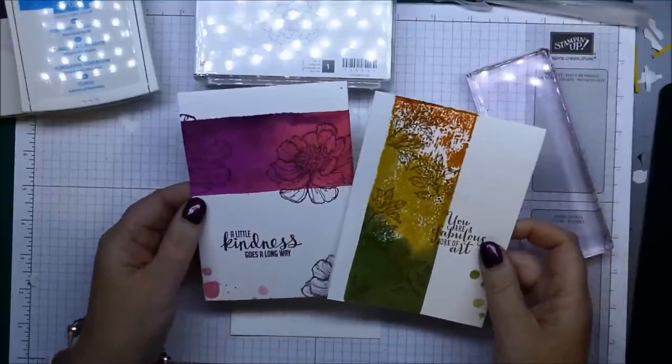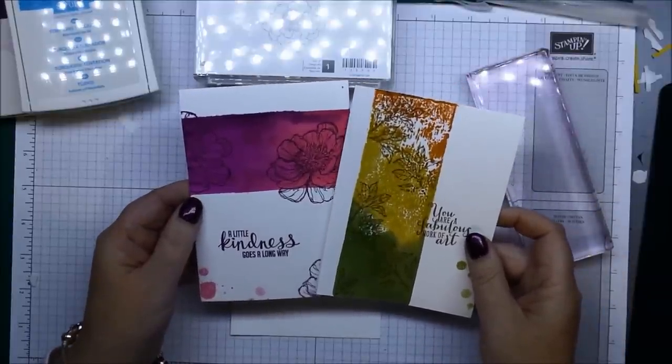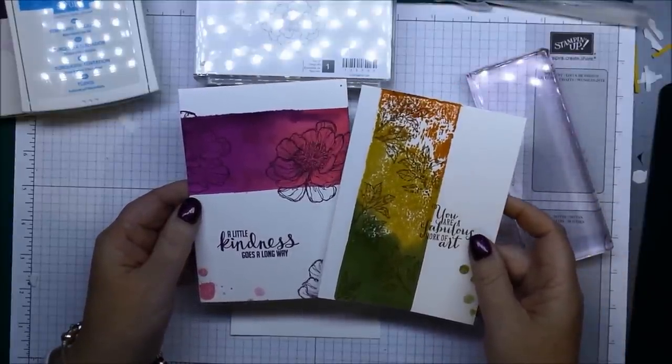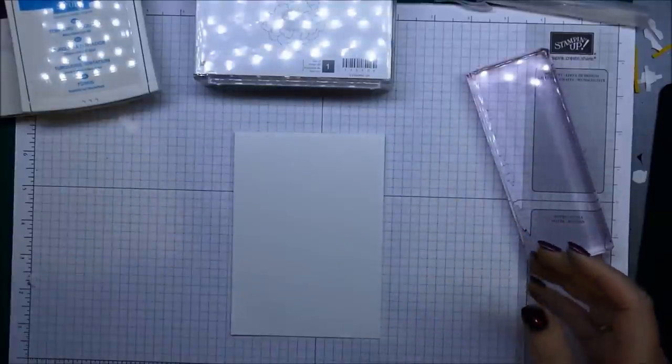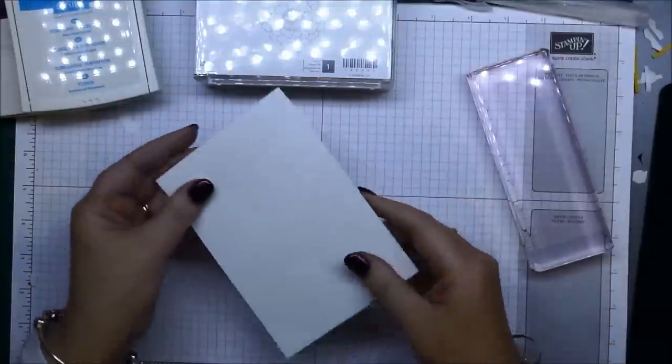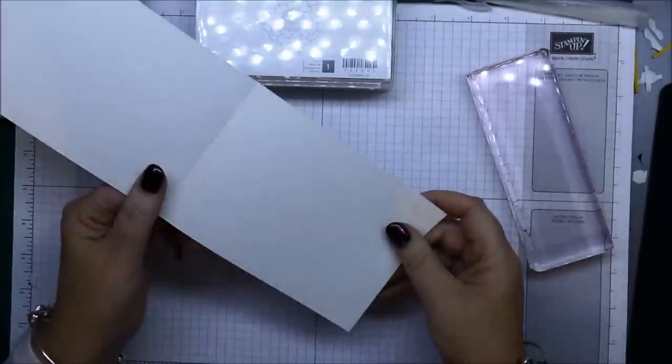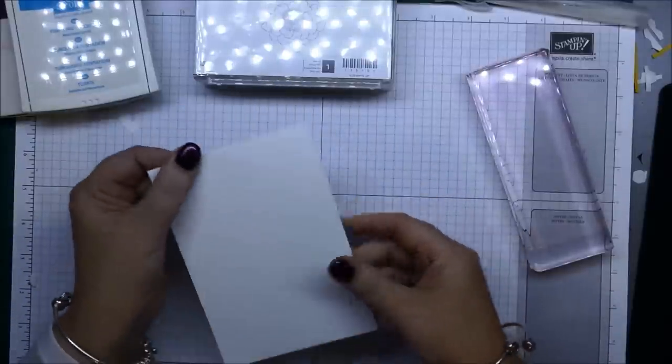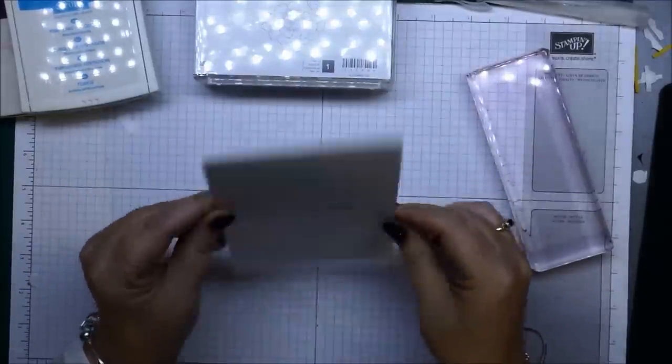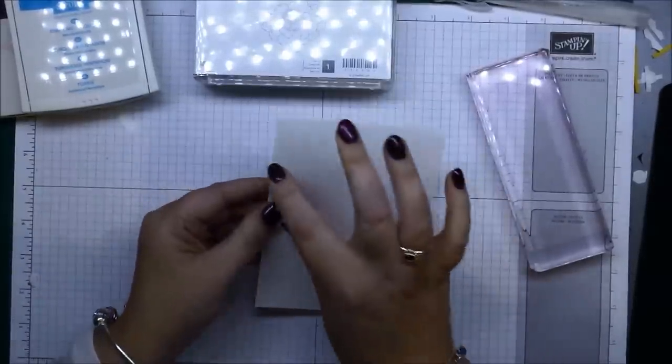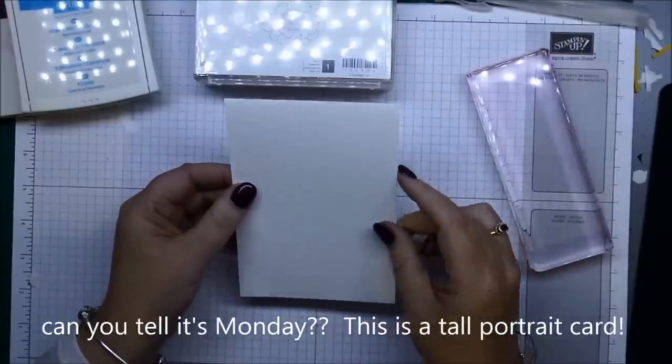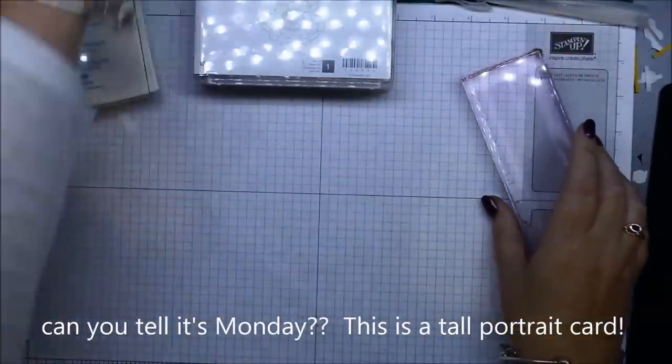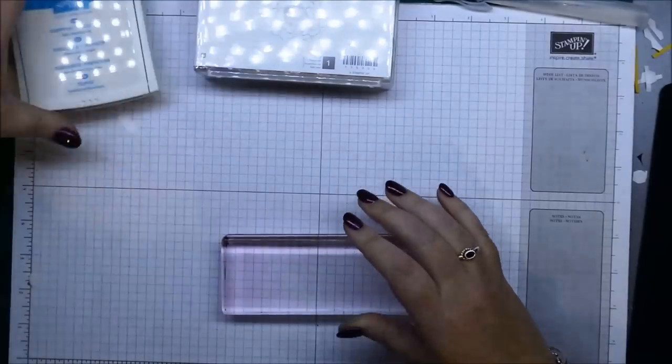Okay so let's get started. I've already got a piece of, half a piece of our A4 cardstock which is just folded in half in the portrait orientation for this one here. So all you need to do, I'll just put that aside because I don't want to get that all inked up first.